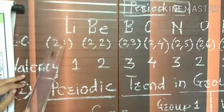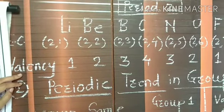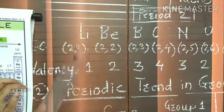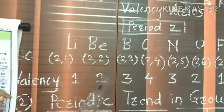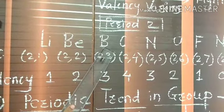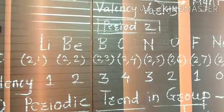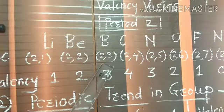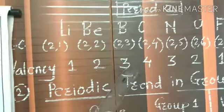In the last orbit of lithium there is 1 electron. If lithium donates 1 electron to another atom, it achieves stability, so the valency of lithium is 1. The valency of beryllium is 2. Boron has electronic configuration 2,3, meaning boron donates 3 electrons to achieve the duplet state, so the valency of boron is 3.